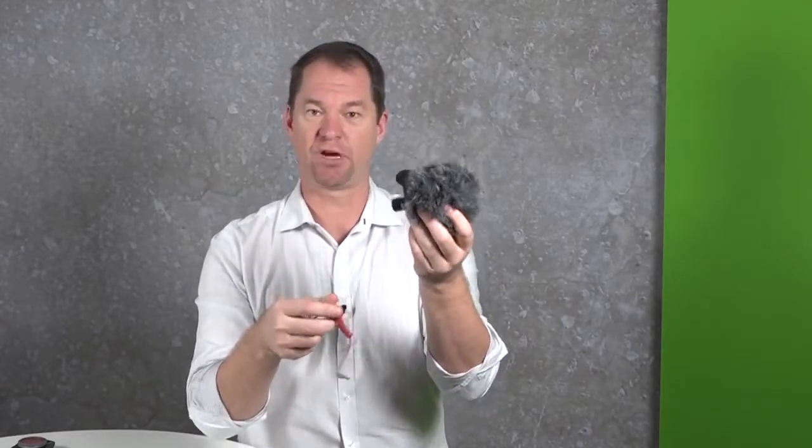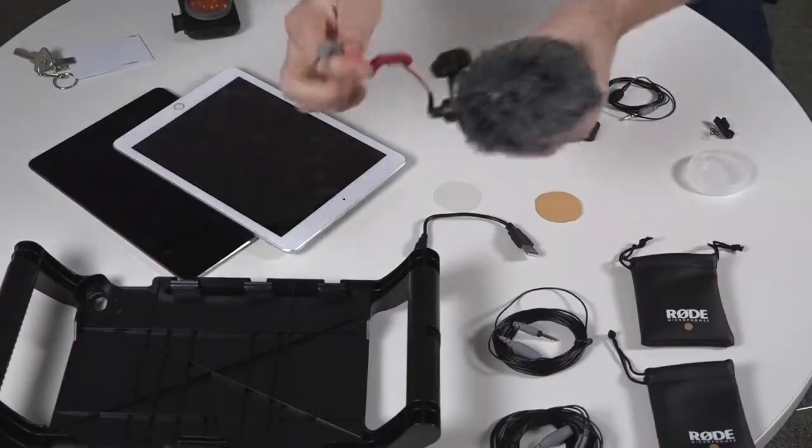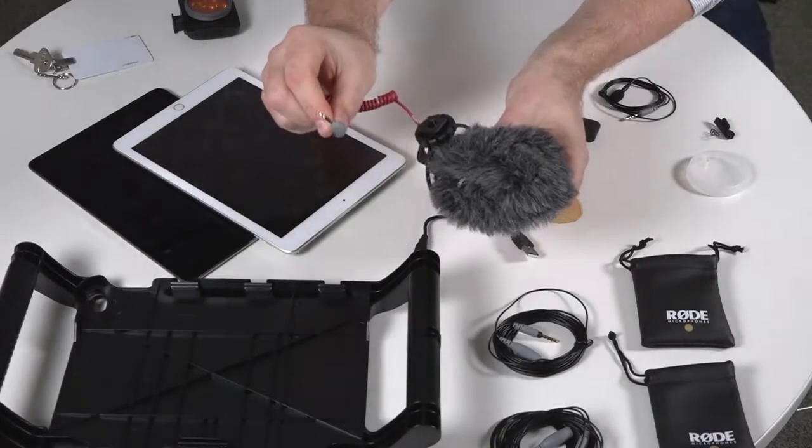The fluffy sock stops the wind from getting recorded. When you've listened to other videos, you might have heard the wind kind of blowing across the microphone. That's what the fluffy sock prevents. Using this cable, plug it into one end and then you'll plug this into the sound end.